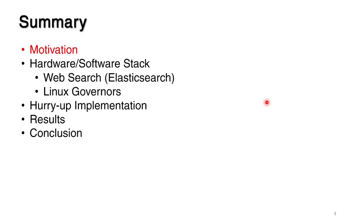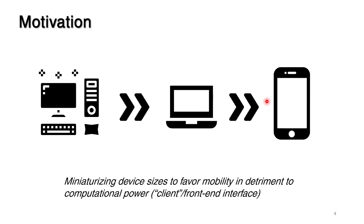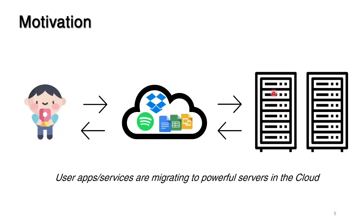Let's start with the motivation of our research. In the last 20 years we have seen a miniaturization of the form factor of the devices we've been using. We pretty much moved from a desktop to a mobile cell phone. For companies, this means that they need to scale because many services such as file storage, music listening, and word processing are now done in the cloud. As the demand grows, the companies need to scale — but how to scale?